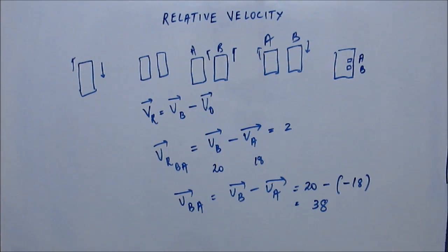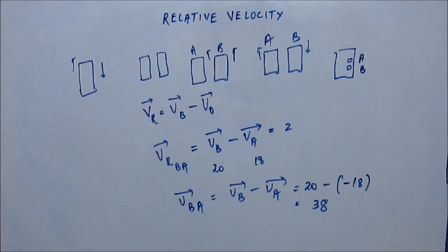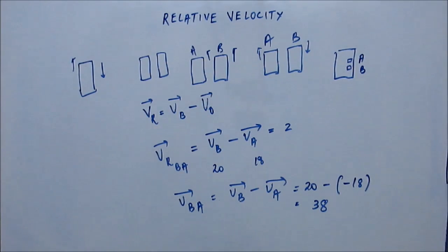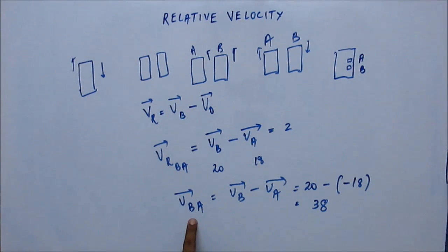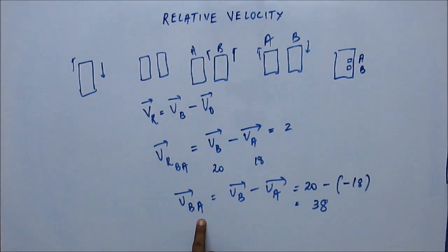So this formula works, considering all the situations we have discussed. Now let's see a formal mathematical proof of the same. Remember: the velocity of body B with respect to body A is velocity of B minus velocity of A — this should come from your heart, because it works across all these situations.